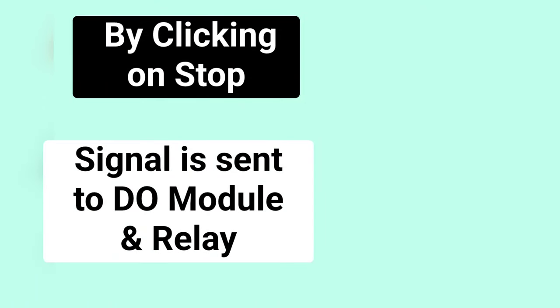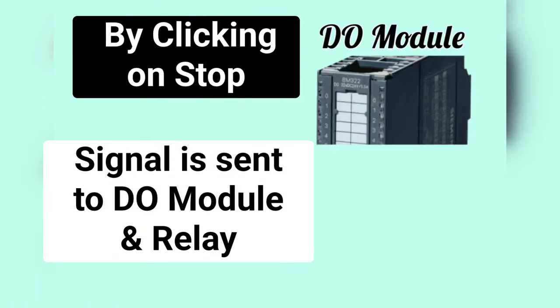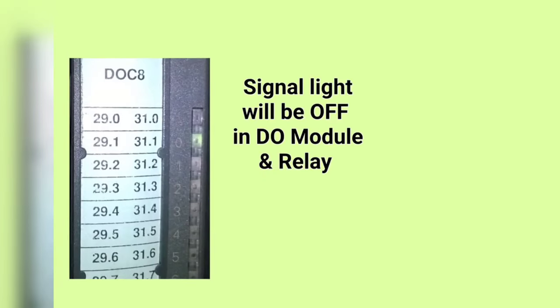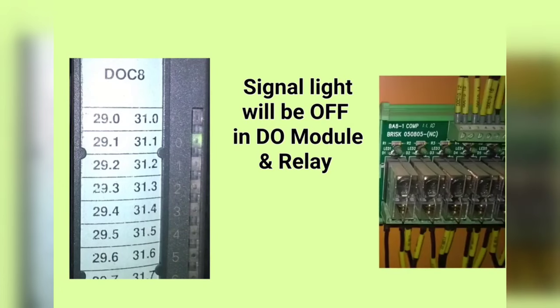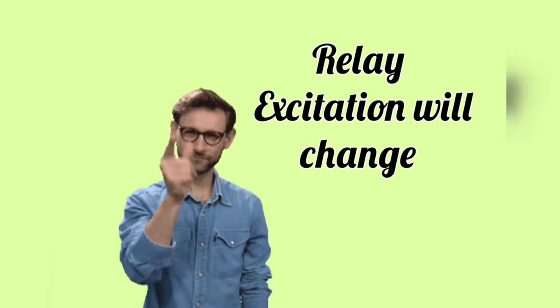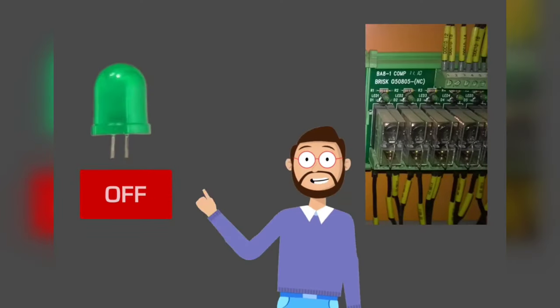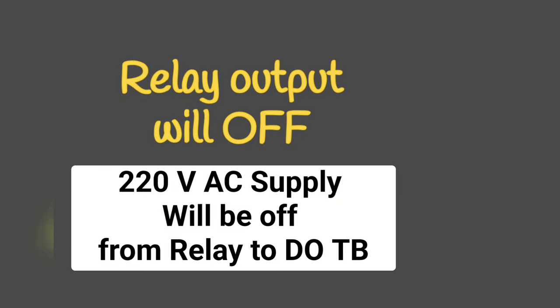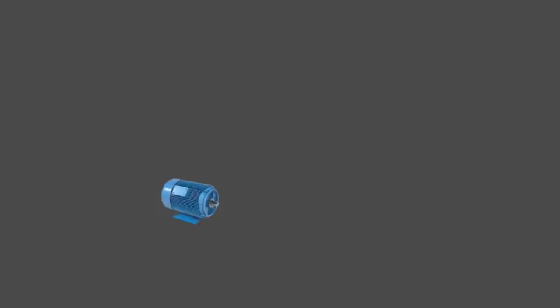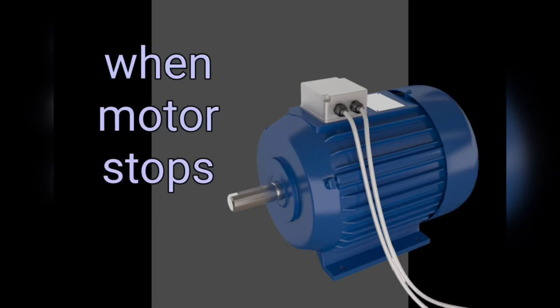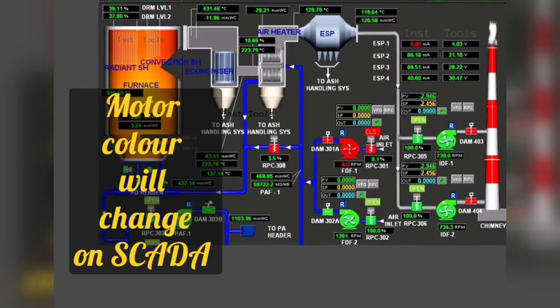By clicking on Stop, the command signal will go to the DO module and relay. The signal which was on in the DO module will turn off. And that signal will be turned off in the relay also. This will change the excitation of the relay and the relay will go off. Also, the LED which was glowing in the relay will turn off. Now the output of the relay will also be off, and finally the motor will stop. When the motor turns off or stops, its color will also change on SCADA from green to red.